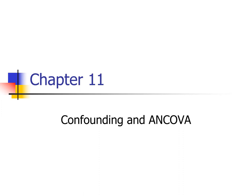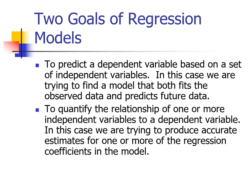Before we talk about confounding, I want to talk about the idea that when you build a regression model you could be doing so with one of two goals in mind. Sometimes you have both, but often you're focused on just one. One of those goals might be prediction — you want to predict a dependent variable based on a set of independent variables, trying to find a model that fits observed data but also predicts future data. A lot of business applications — banking, finance, economics — tend to be focused on prediction.